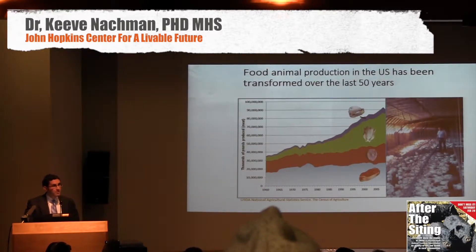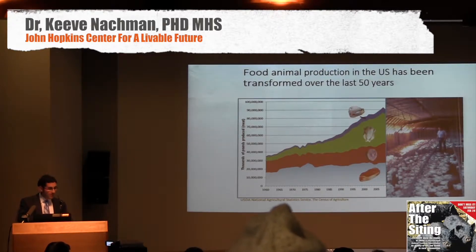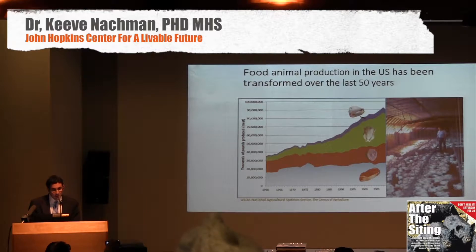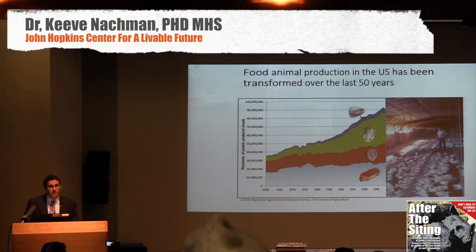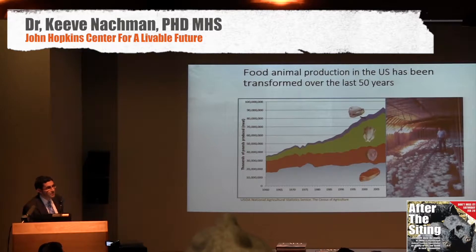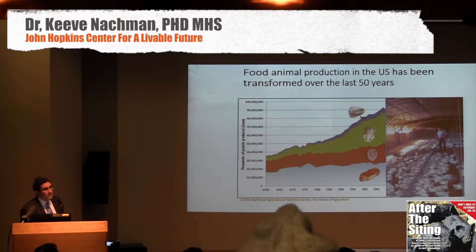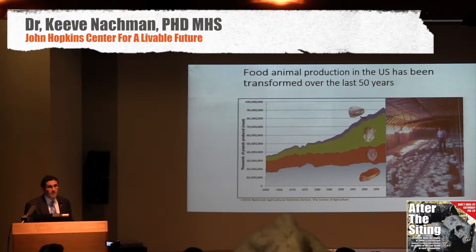Food animal production has changed dramatically in the last half century. These are data from the USDA National Agricultural Statistics Service showing meat production over time since 1960. We're producing a lot more meat now than we used to. Within different types of animal production, there's been substantial growth. I spend a lot of my time studying industrial poultry production, which has experienced the largest growth in the last 60 years. But even within swine, which I'm going to focus on today, there's been considerable growth over the last half century.